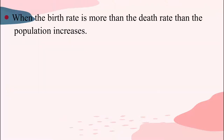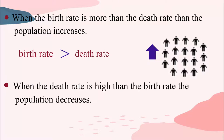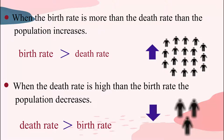When the birth rate is more than the death rate, the population increases. And when the death rate is higher than the birth rate, the population decreases.